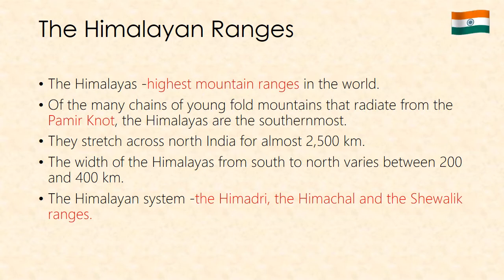The Himalayas stretch across North India for almost 2,500 km. The width of the Himalayas from south to north varies between 200 and 400 km. The Himalayan system consists of three distinct ranges: the Himadri, the Himachal and the Shivalik ranges.